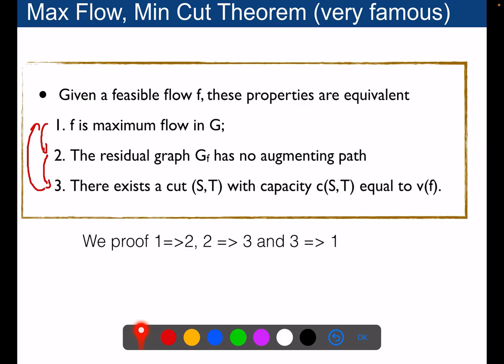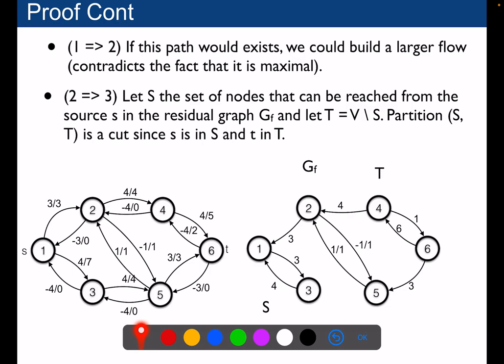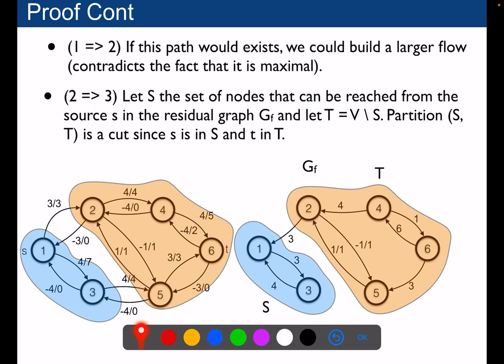The goal is to discover this partition. How do we find it? We start from the source in the residual graph and do a depth-first search from that node to discover all nodes that are reachable from the source. This will become the blue partition, which will be S, and the other nodes will be the T set of the ST partition in our graph.